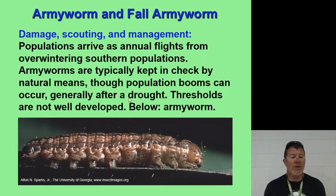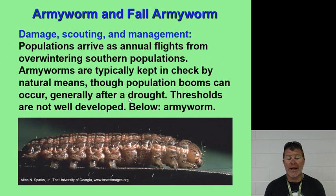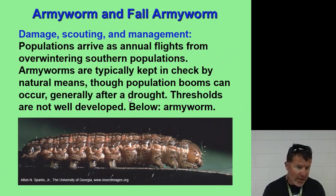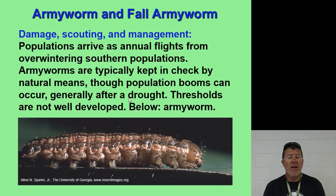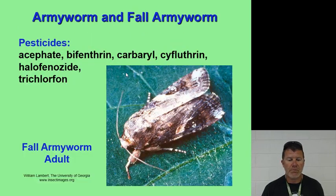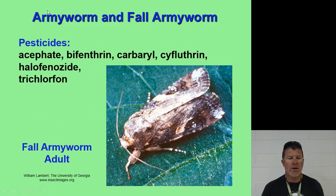Fall army worm populations are typically kept in check by natural means, although population booms can occur, generally after a drought. Pesticides include carbamate insecticides, bifenthrin, and trichlorfon, among others.